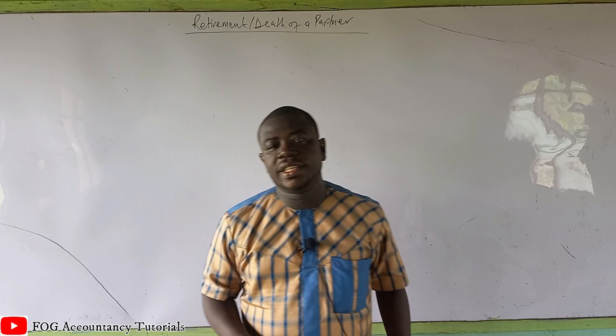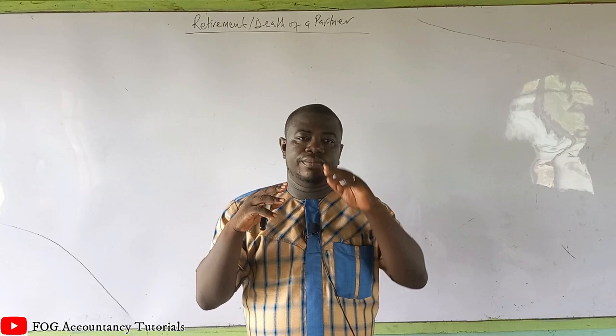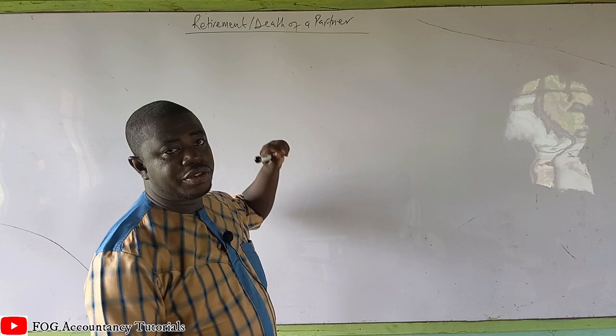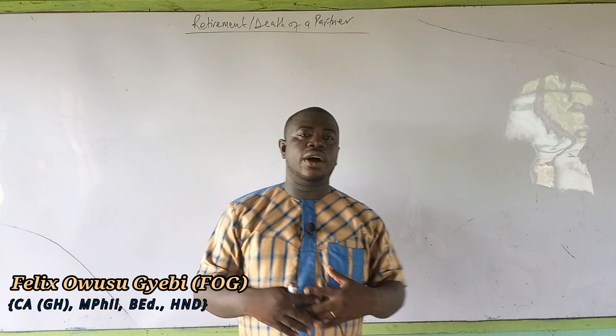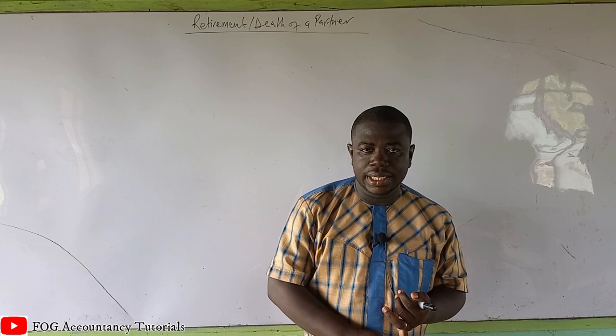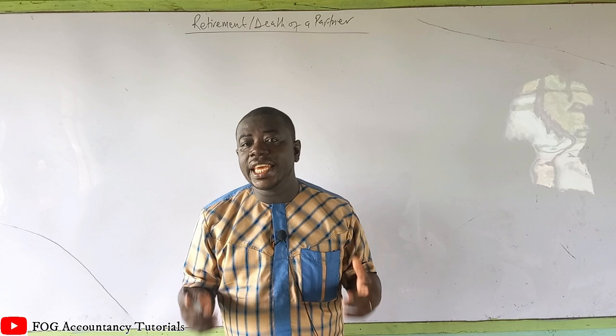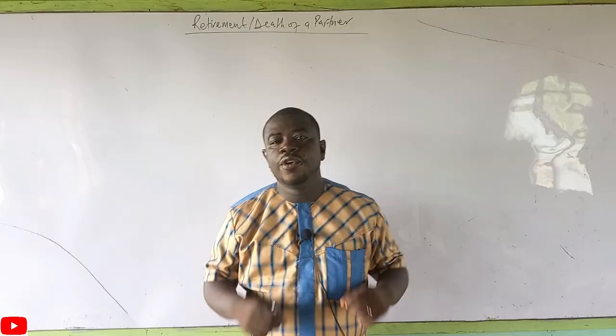Good day, welcome to another session of FOG Accountancy Tutorials. Today we are going to continue our series on partnership accounts and look at another factor that causes a change in partnership, which is the accounting treatment for retirement or death of a partner. We want to look at the accounting treatment and how to pass entries into the books of accounts in a situation where a partner dies, retires, is redrawn, or dismissed. In any case, when a partner is leaving, what are the accounting arrangements — that is what we are going to focus on.